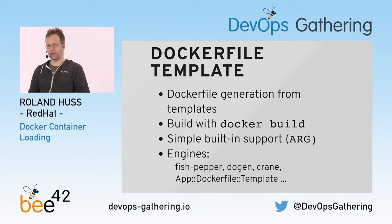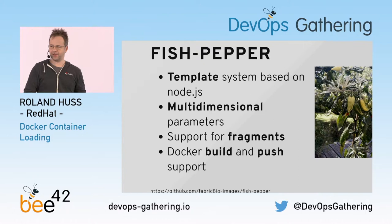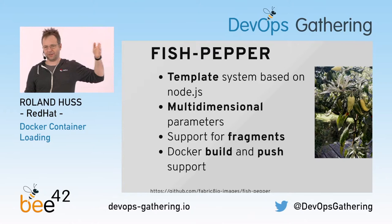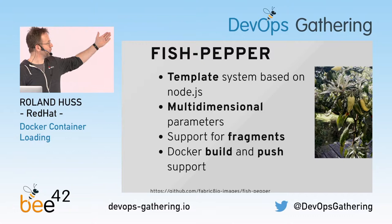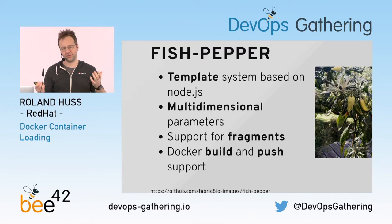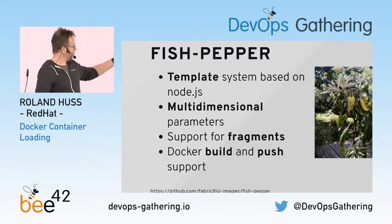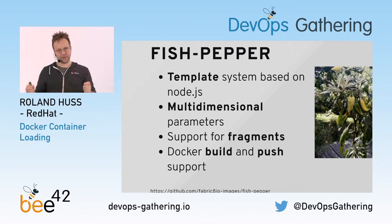I'll look into one of them more closely — it's called Fish Pepper. When I do a new open source project I typically call it after some kind of pepper. Fish Pepper is a pepper from the east side of the US coast, and 'fish' of course has a nice association with Dockerfile. This is a template-based system based on Node.js. The special thing about it is that it's multidimensional, which means you can create a whole family of Docker builds.